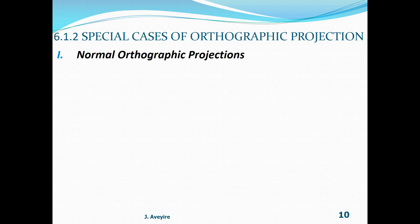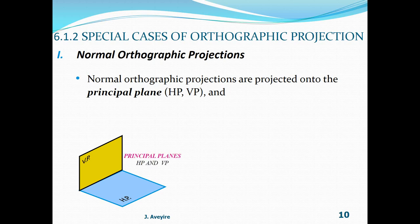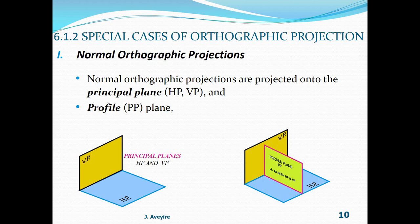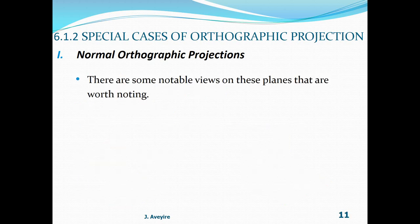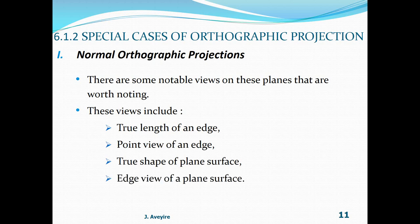Normal orthographic projections are projected onto the principal planes, that is the HP and VP — the horizontal plane and vertical plane — and the profile plane PP. These planes are 90 degrees to each other. There are some notable views on these planes worth noting: true length of an edge, point view of an edge, true shape of a plane surface, and edge view of a plane surface.